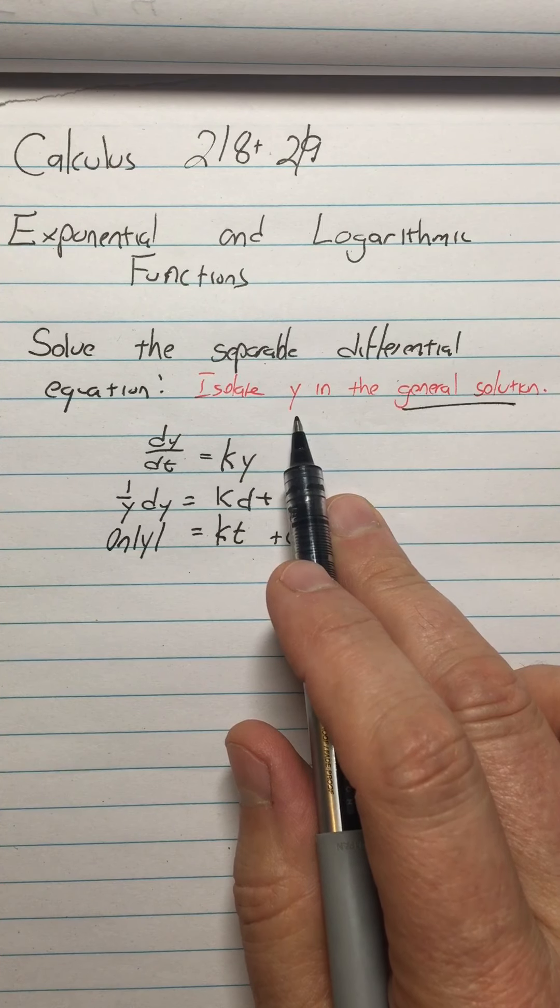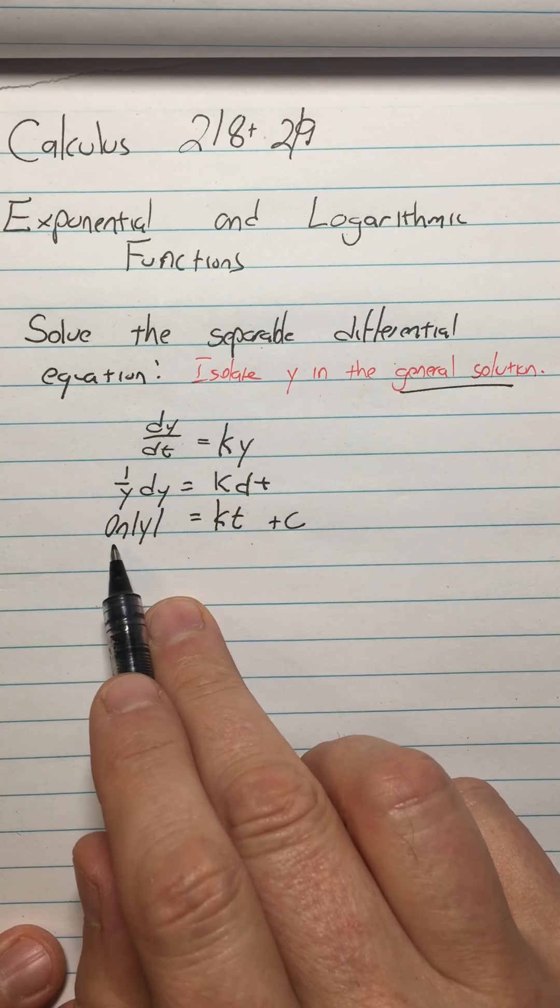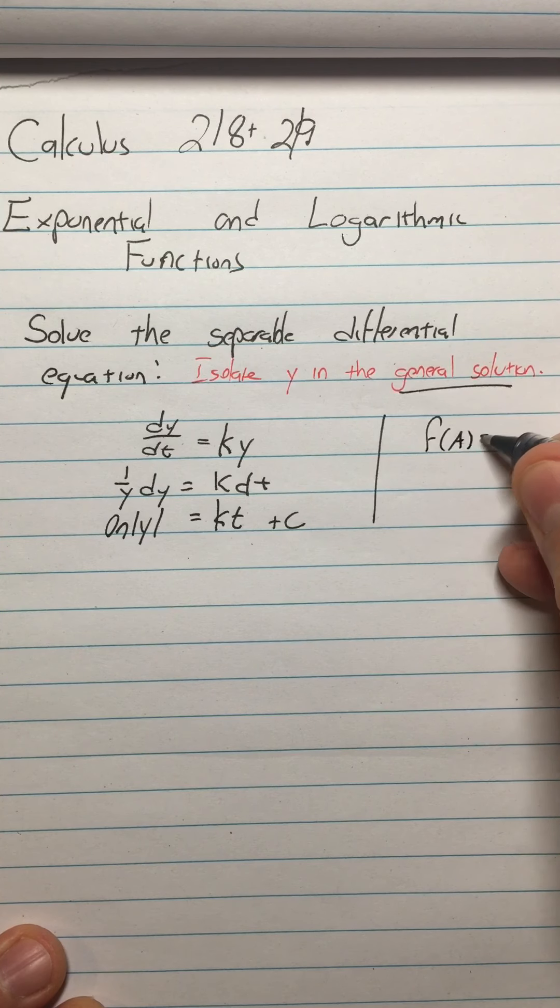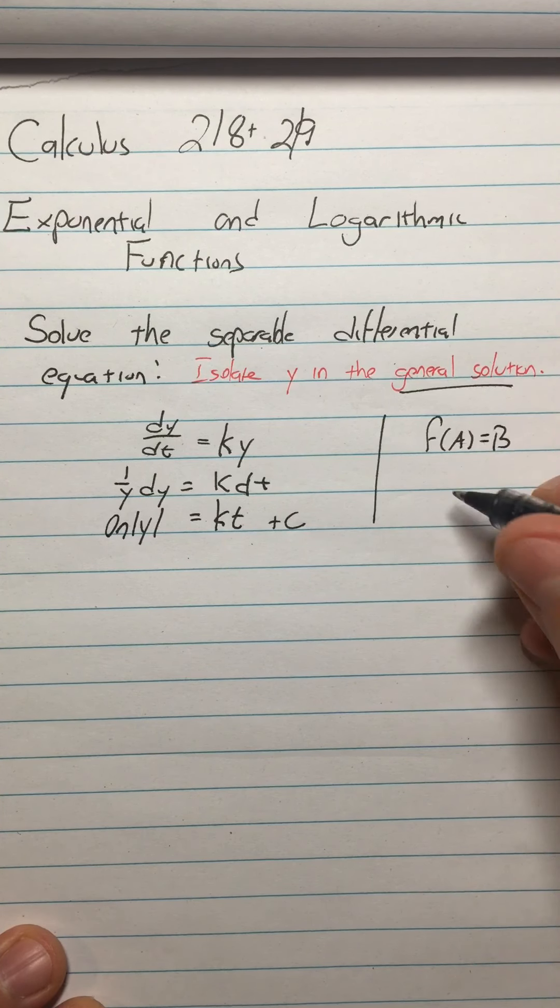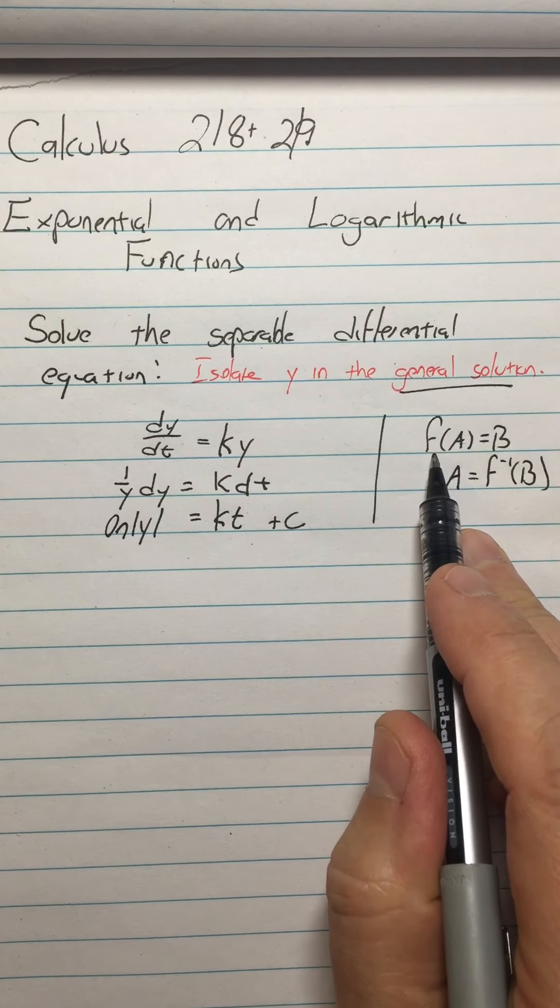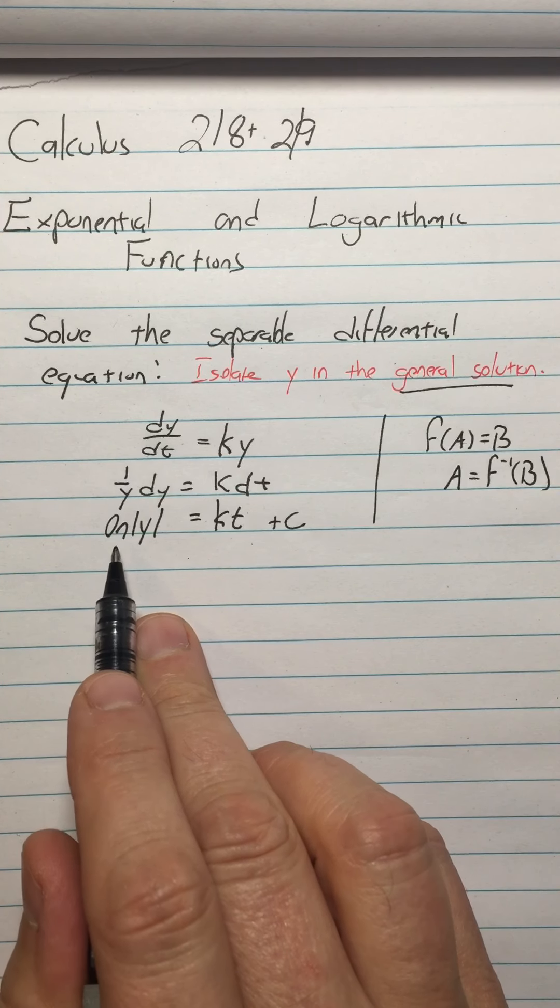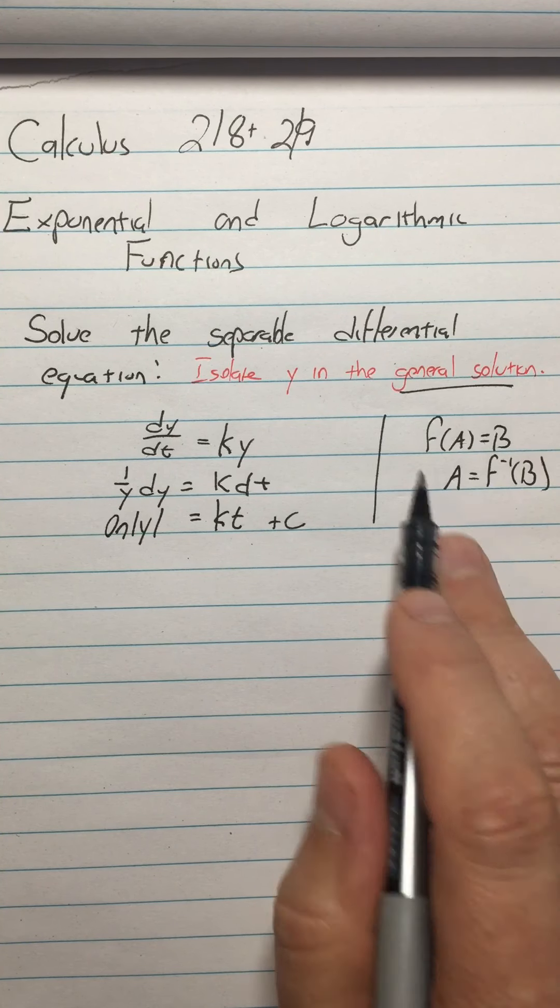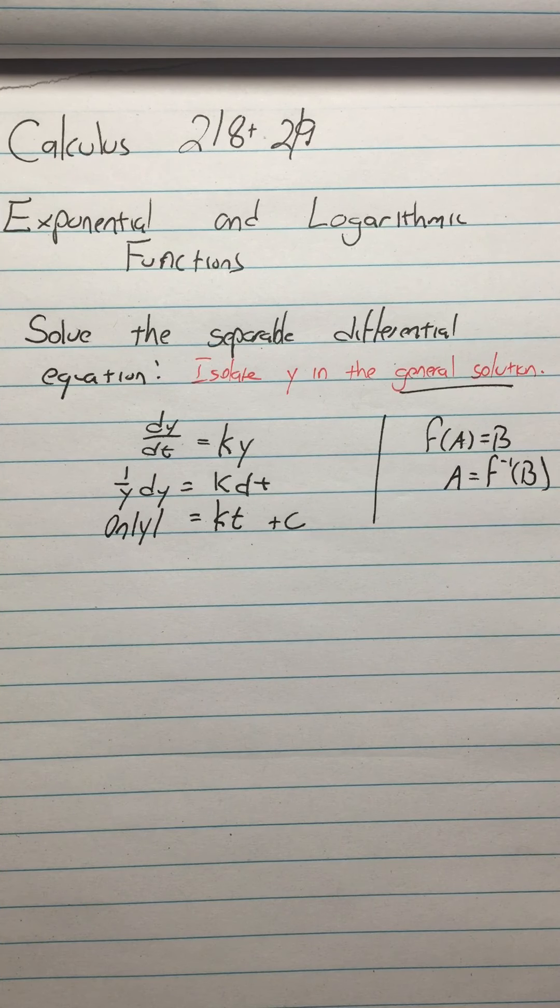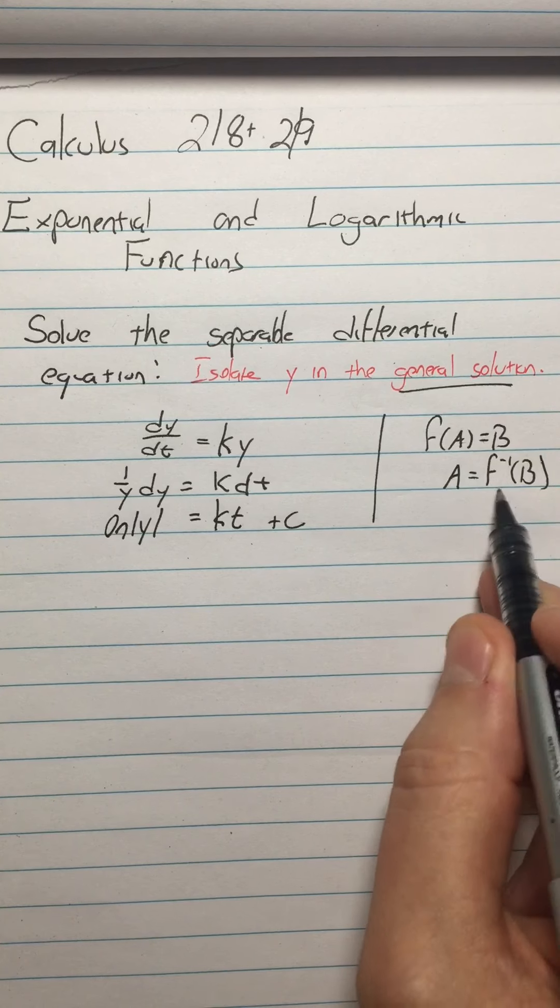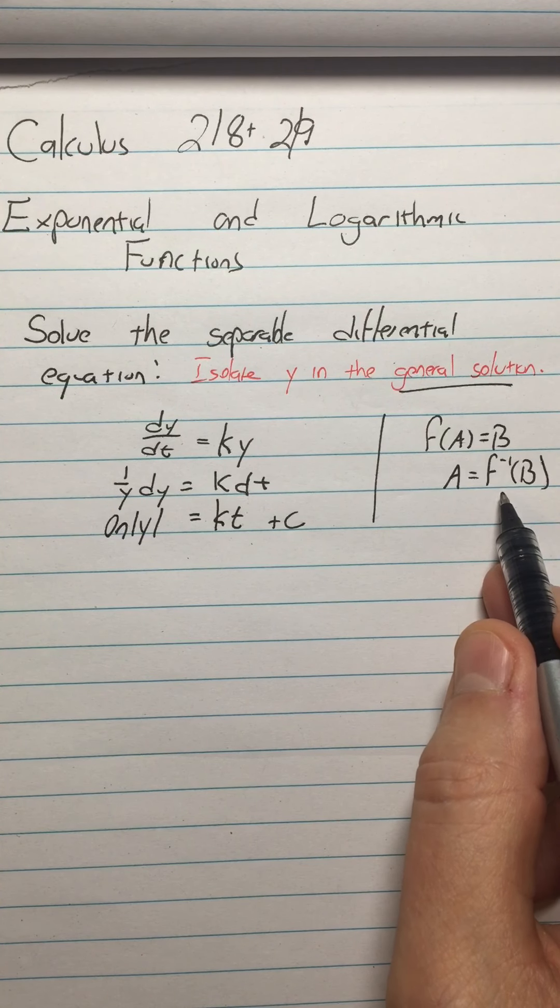Now, we want to isolate the Y in the general solution. So how you do that, since this is ln of Y, I want to keep coming back to this. If I have any equation F of A equals B, and I'm trying to solve for the A, then I use the inverse function: A equals F inverse of B. So a function can always pass to the other side as its inverse. What that means is, I have ln of Y on one side, I can just pass that ln to the other side as E to the X, because E to the X is the inverse of ln of Y. So now I have absolute value of Y is equal to E to the KT plus C.